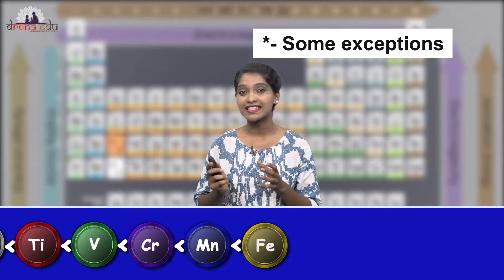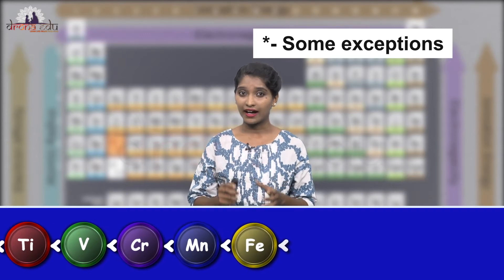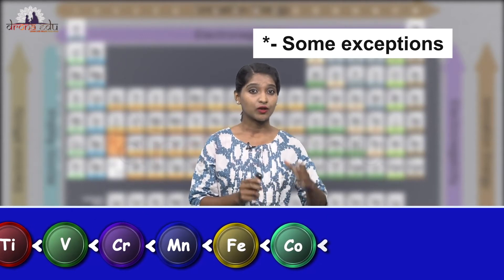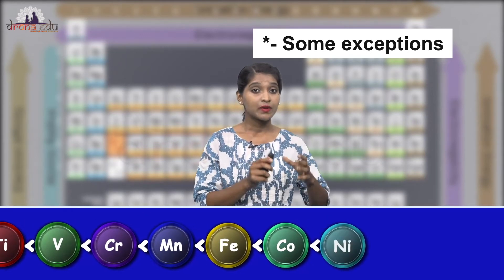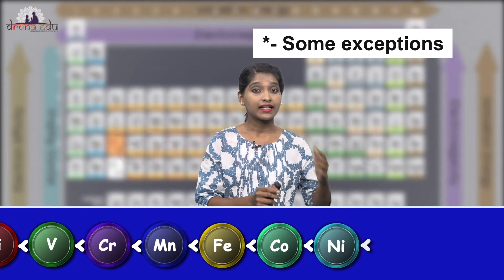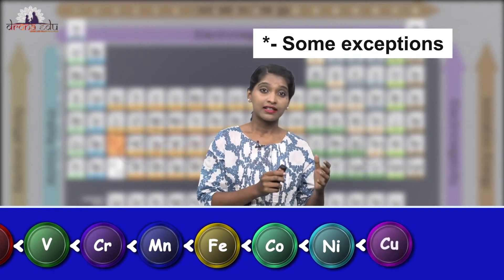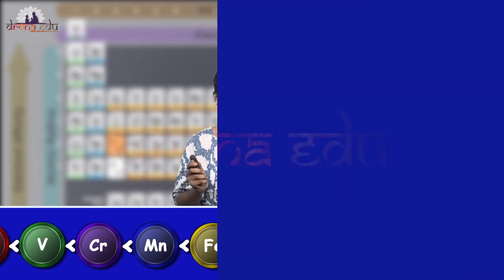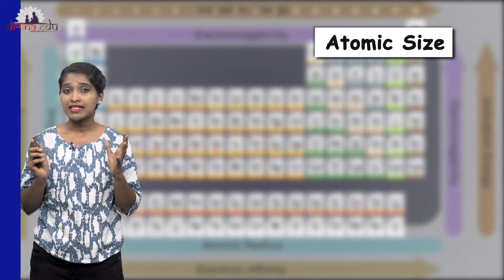Chromium is less than manganese, manganese is less than iron, iron is less than cobalt, which is less than nickel, which is less than copper. The atomic size.